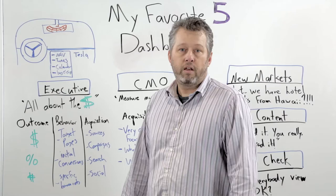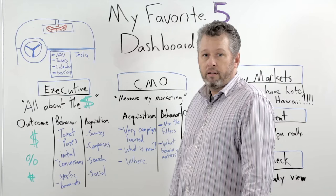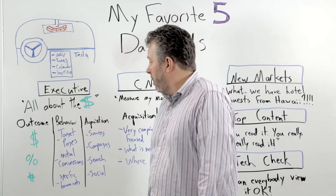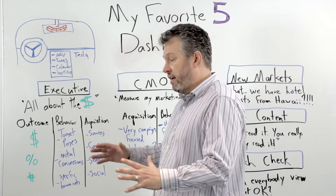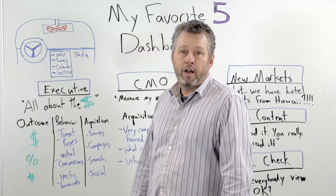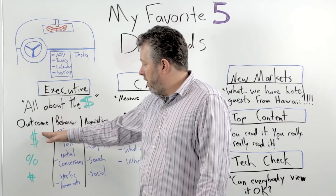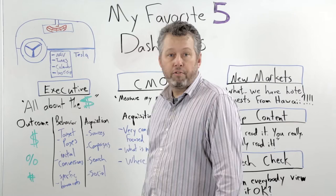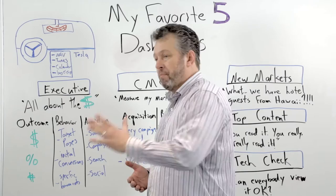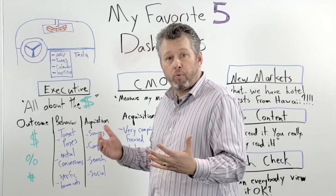Let's start with the executive dashboard. There is a lot of debate on whether to go left to right or right to left in terms of outcome, behavior, and acquisition — Google Analytics gives you those areas. When you're talking to executives or CFOs, it's my personal opinion that executives always want to see the money first. Focus on financials, conversion rates, number of sales, number of leads. They don't want to go through the marketing first and then get to the numbers — just give them what they want, and in a dashboard they're seeing that first.